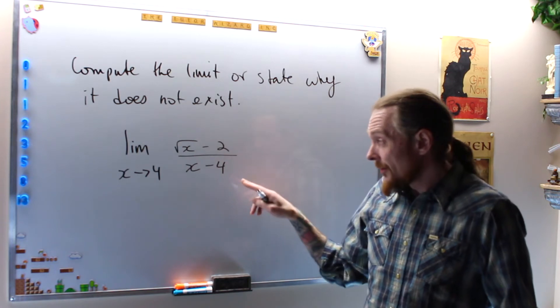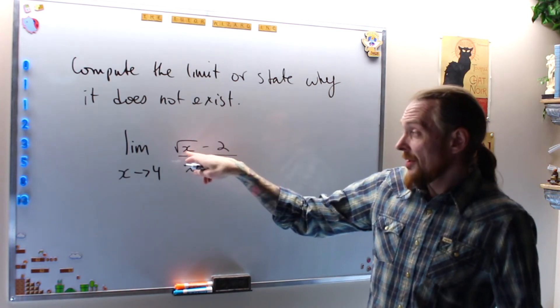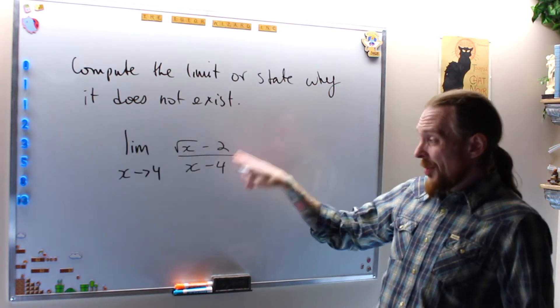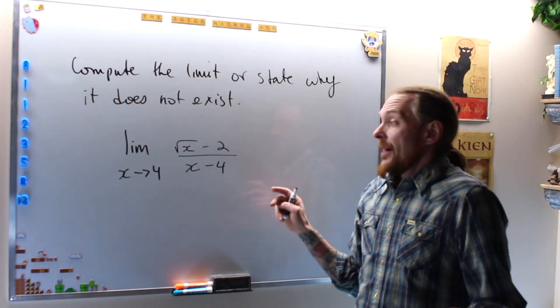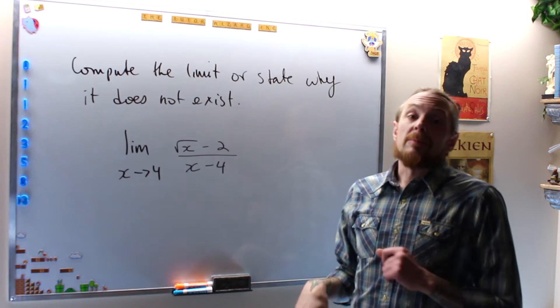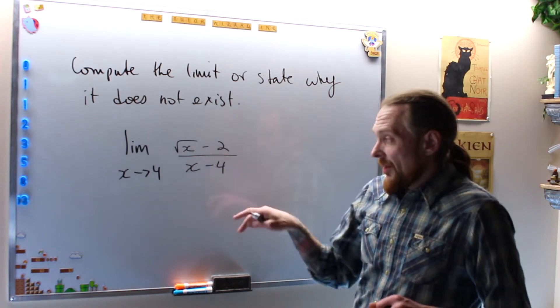Yes, this is actually 0 over 0. I have the square root of 4 is 2, minus 2 is 0 on the top, and I have 4 minus 4 is 0, so this is indeterminate. I can't tell unless I can use some clever algebra to rectify this, which is what I'm going to do.